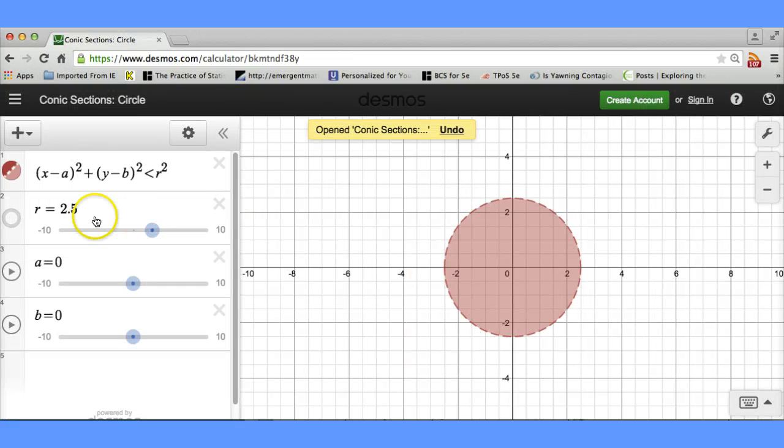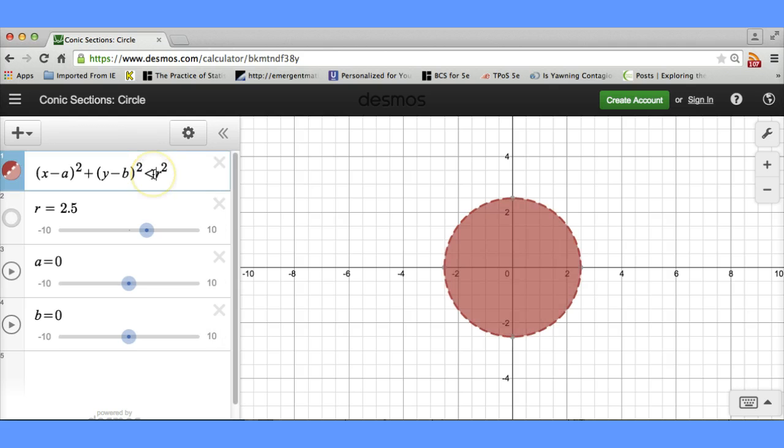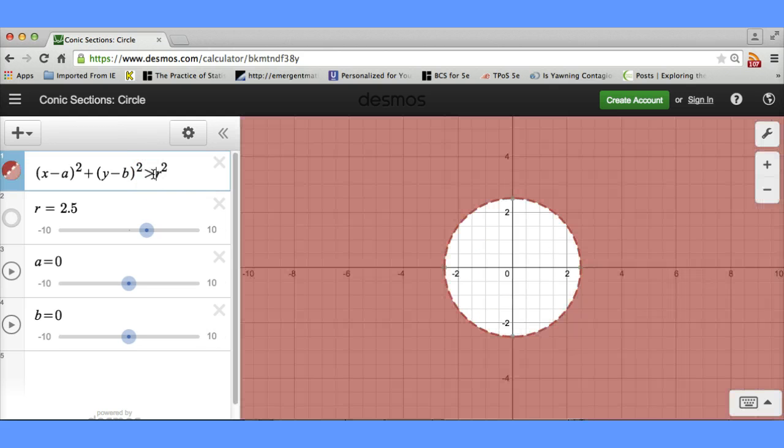Let's see. R probably stands for radius. That would make the most sense. And notice, this is shaded. I wonder if that's shaded because of the less than. Let's see what would happen if we change this to greater than.